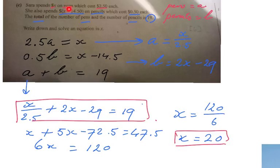So if she spends 20 on pens and they're $2.50 each, that means she buys 8 pens. And 20 minus 14.50 is $5.50, so she buys 11 pencils. 11 plus 8 indeed is 19 in total.